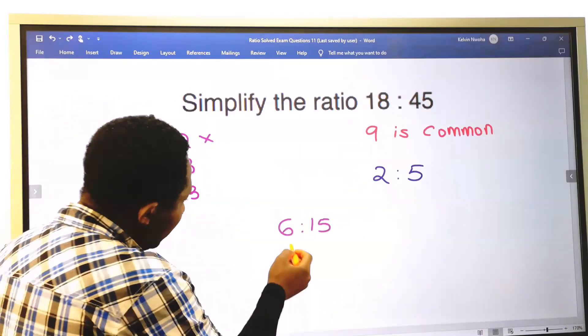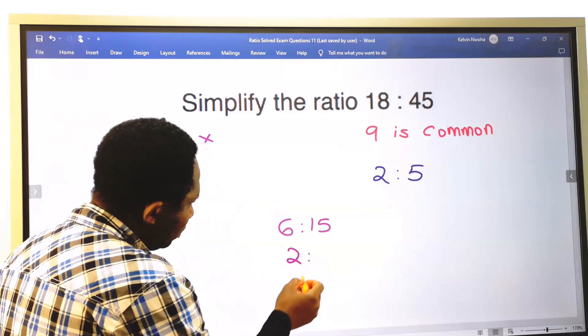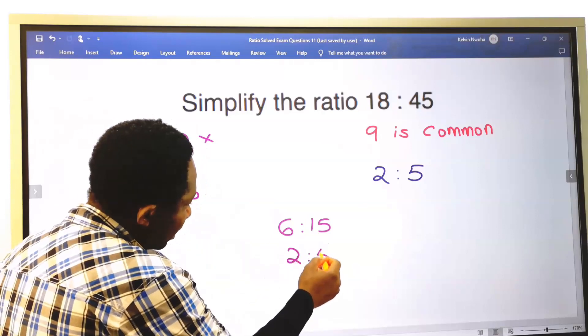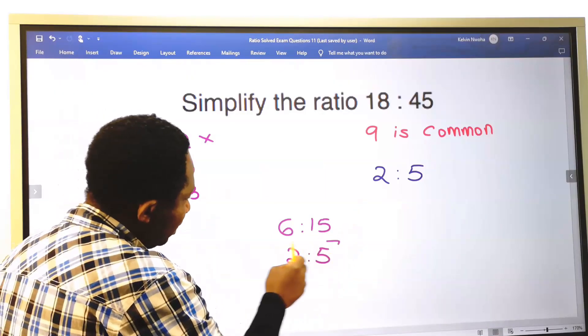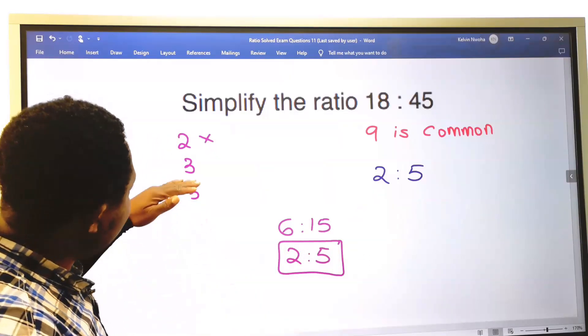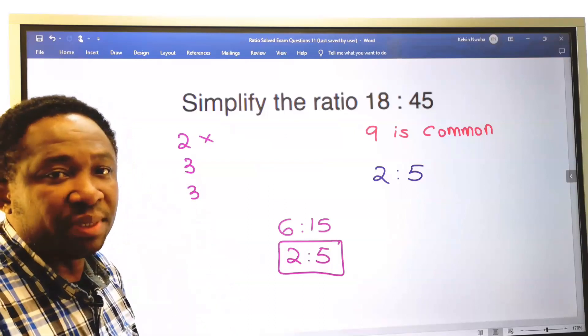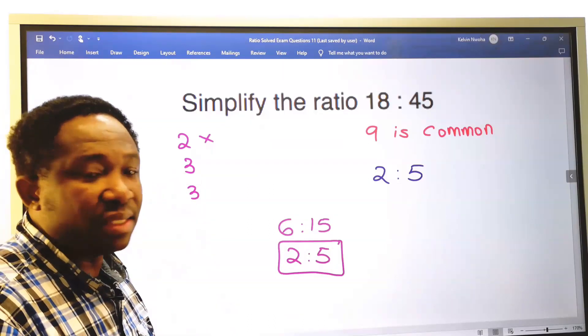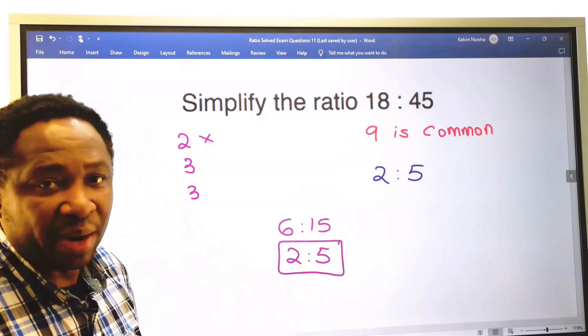Next, 3 can still go. 3 into 6 is 2, and 3 into 15 is 5, which is the same answer we obtained. This is when you want to start with the simplest numbers, and it depends on the type of ratios you are comparing.